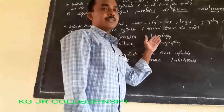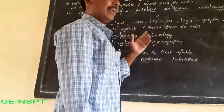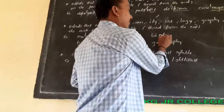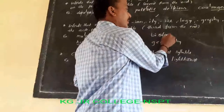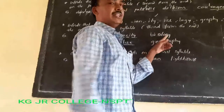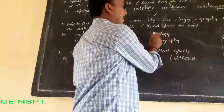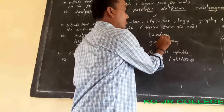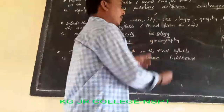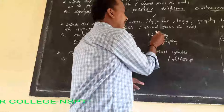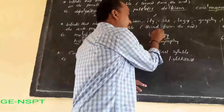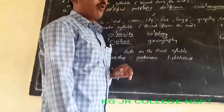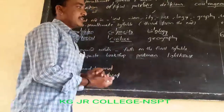Next: 'biology'. Bi-o-lo-gy — bi: one, o: one, lo: one, gy: one — four syllables. The last to third syllable is 'o'. So the stress falls after 'i' and before 'o': bi-OL-o-gy.